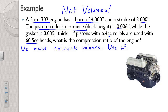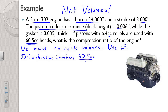Let's start with volume number one. Up at the top of the cylinder are our combustion chambers. We have 60.5 cc heads — that is the volume of our combustion chamber — but we need to convert that. So 60.5 cc's divided by 16.39 cc's per cubic inch turns out to be 3.69 cubic inches.